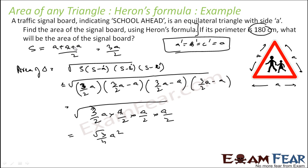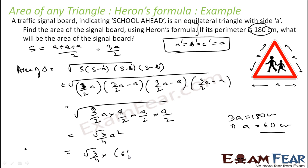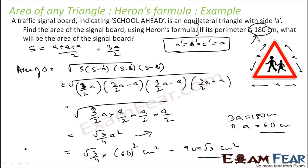Now, if the perimeter is 180, what will be the area? The perimeter is 3a = 180, so a = 60 centimeters. If a is 60 centimeters, the area is √3/4 × 60² = √3/4 × 3600 = 900√3 centimeter square. The general formula for an equilateral triangle is √3/4 · a², consistent with other methods. Since the perimeter was given, we found a = 60 cm and substituted to get the area.